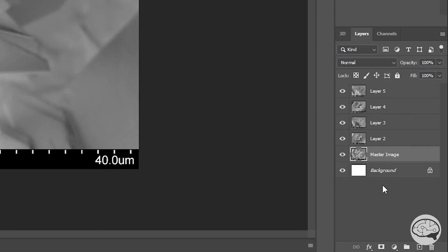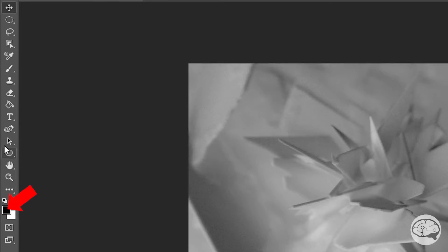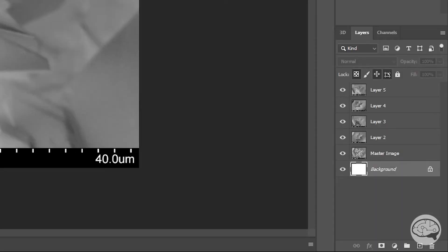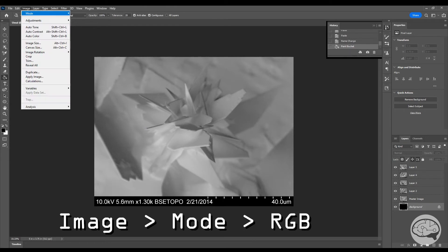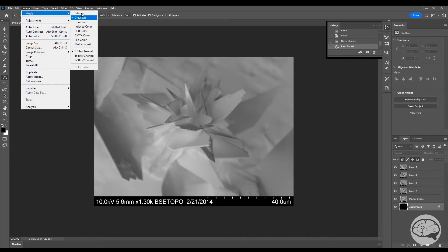We also want the background layer filled completely black. To do that, we'll select the background layer. We'll go over to the other side of the screen and make sure the top color layer is black, then select the fill bucket and click on the image. That should fill our background completely black. We'll also make sure that this new image is set to RGB or CMYK color.